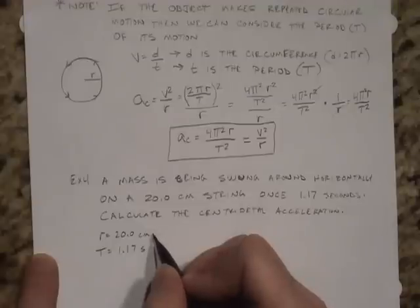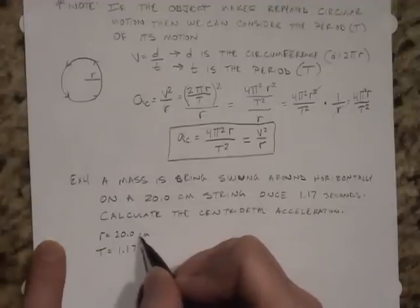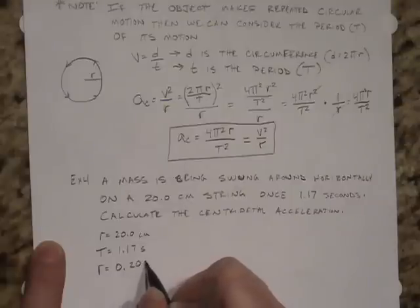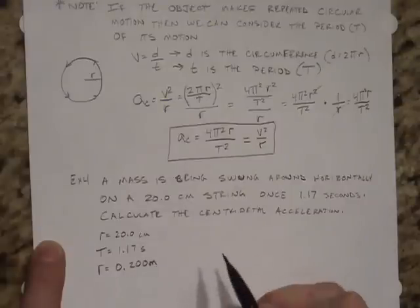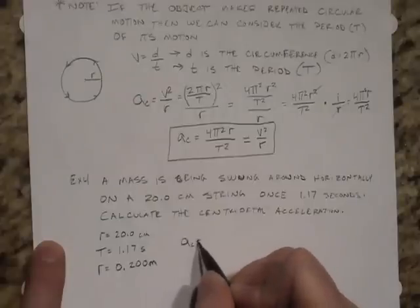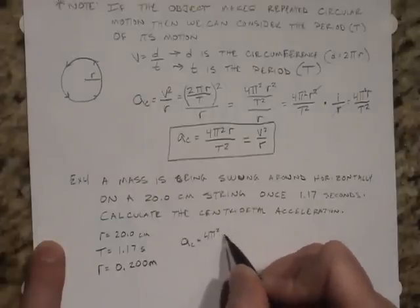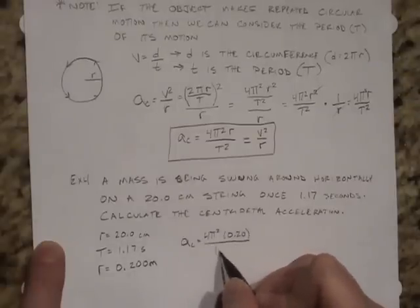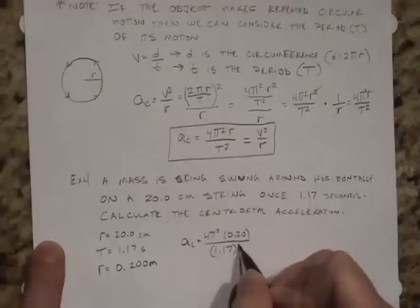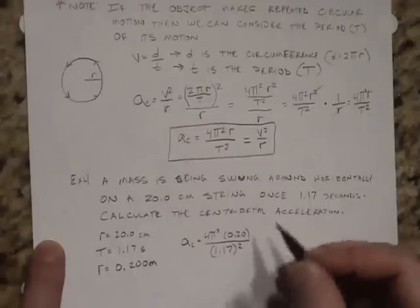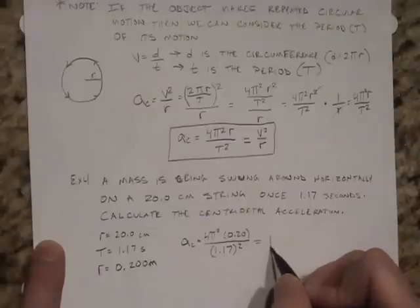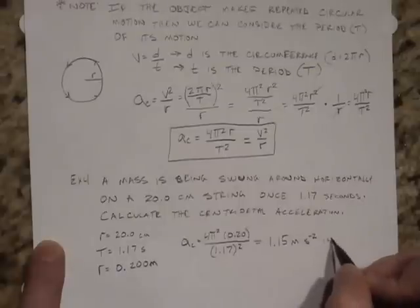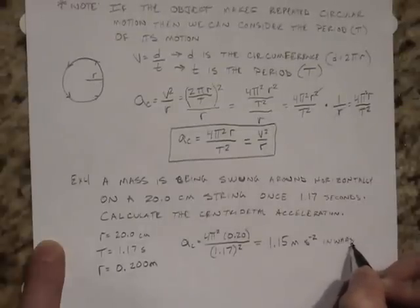The radius is not in proper units, so it's best to convert it to meters: 0.200 meters. Therefore, the centripetal acceleration is equal to 4π² times 0.20 divided by 1.17 squared. This produces a centripetal acceleration of 1.15 meters per second squared. And to specify the direction, the direction is inward.